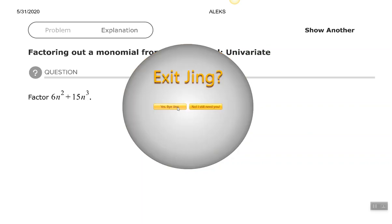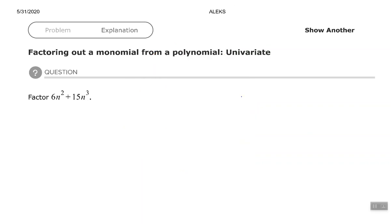Hey, good people, Arthur Morris here. I hope all is well. In this video we're going to look at factoring a monomial from a polynomial — univariate — so basically we're looking at factoring out the greatest common factor. The greatest common factor, if you're looking at the numbers, is the largest number that both of those two existing numbers can be divided by.